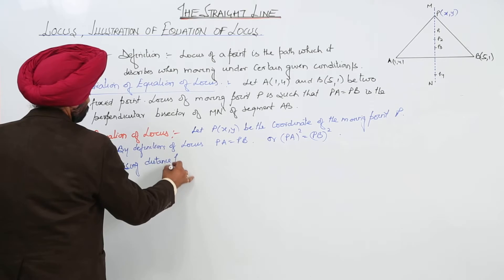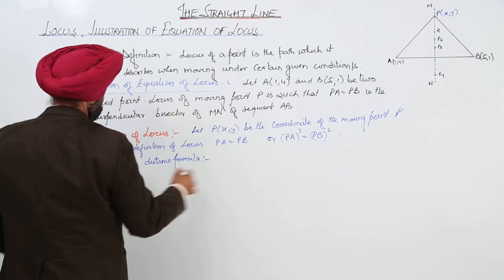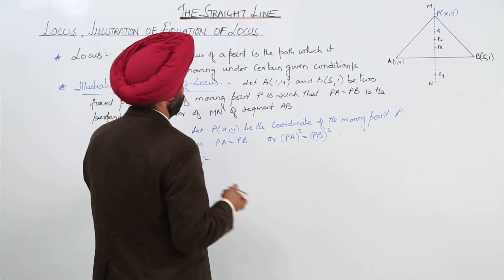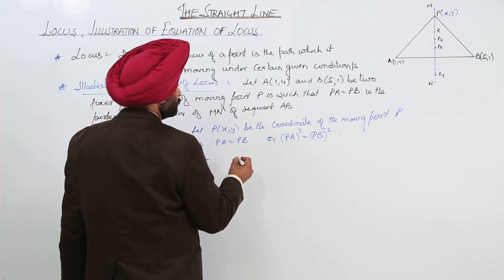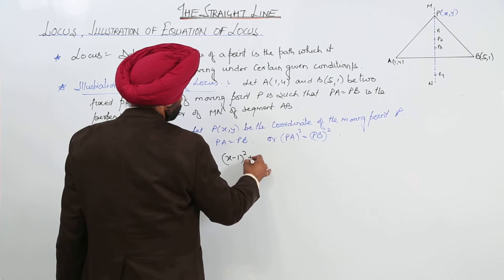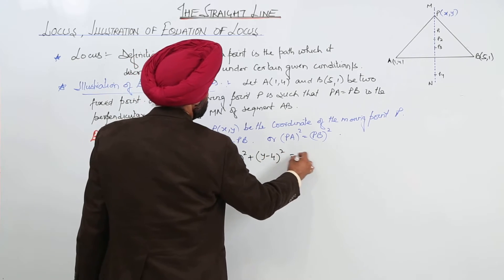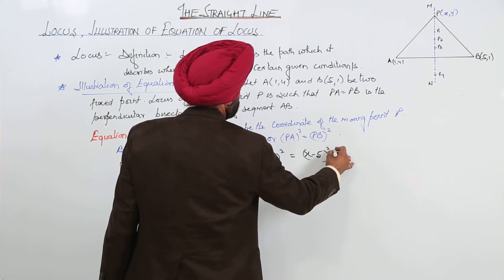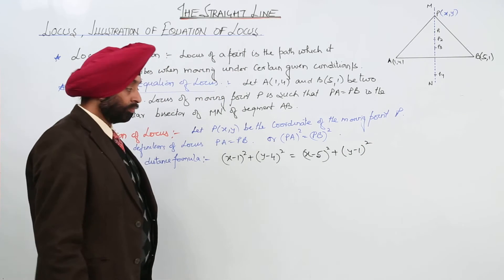now coordinates for P, that is X, Y. So, by using the distance formula, we are having now (X minus 1) whole square plus (Y minus 4) whole square is equal to (X minus 5) whole square plus (Y minus 1) whole square.